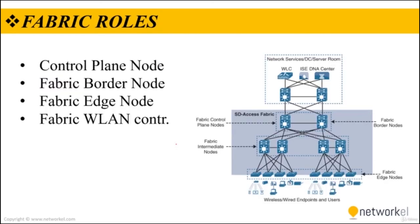The operation of the fabric overlay requires several different device roles, each with a specific set of responsibilities. Each fabric-enabled network device must be configured for one of these roles. During the planning and design process, it is important to understand the fabric roles and select the most appropriate network device for each role. There are four basic device roles in the fabric overlay: the control plane node, fabric border node, fabric edge node, and fabric wireless LAN controller.